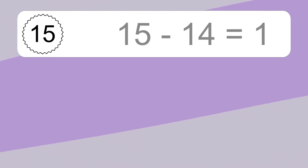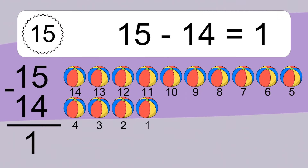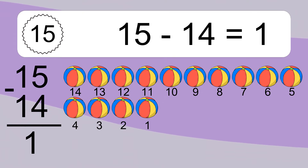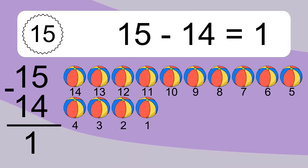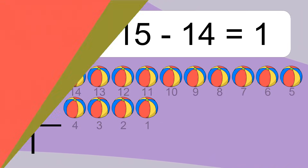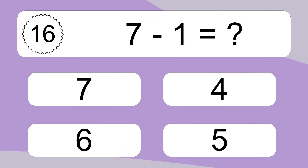15 minus 14 equals 1. Let's count it: 14, 13, 12, 11, 10, 9, 8, 7, 6, 5, 4, 3, 2, 1. 7 minus 1 equals what?